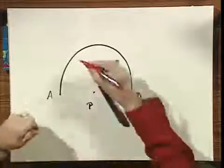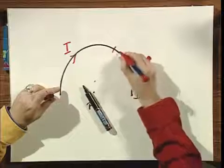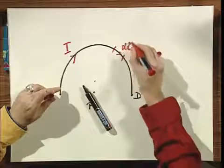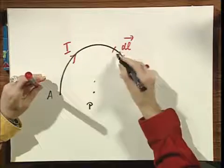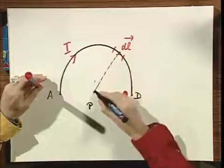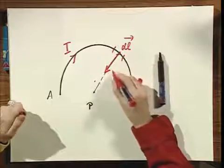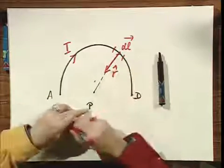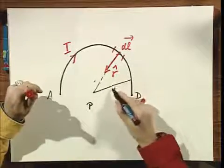I have a current I in this direction, and I have here a little element DL. I have here this vector R, and the unit vector R hat is in this direction. And let the radius of this circle be capital R.